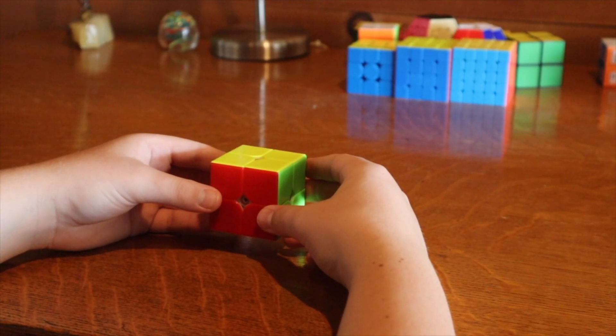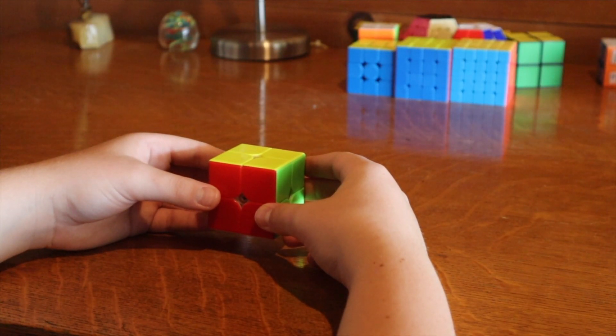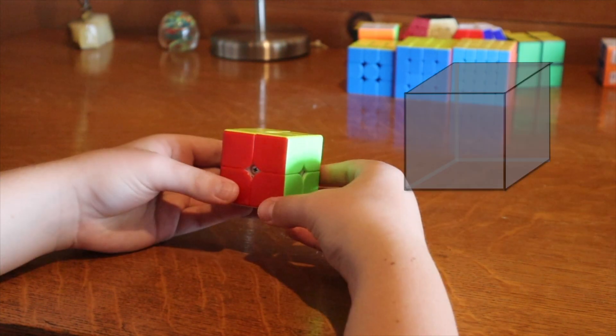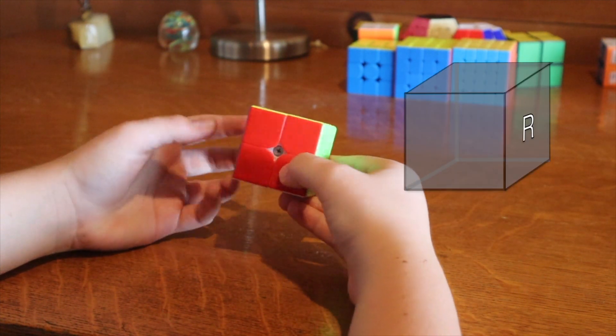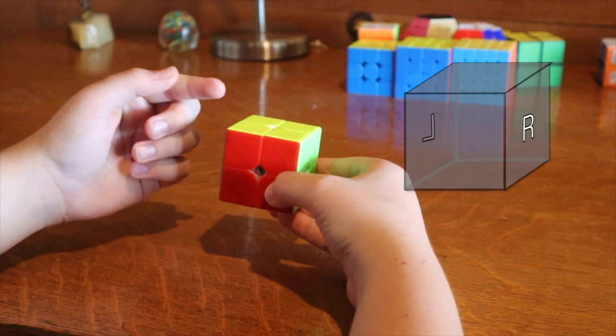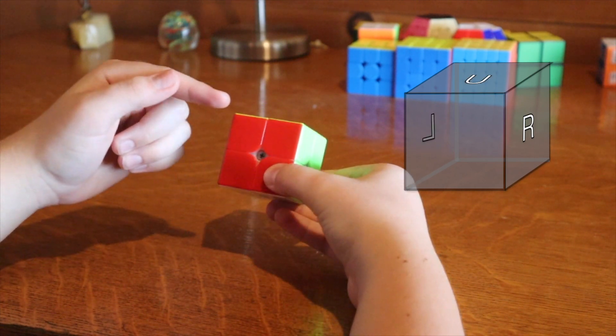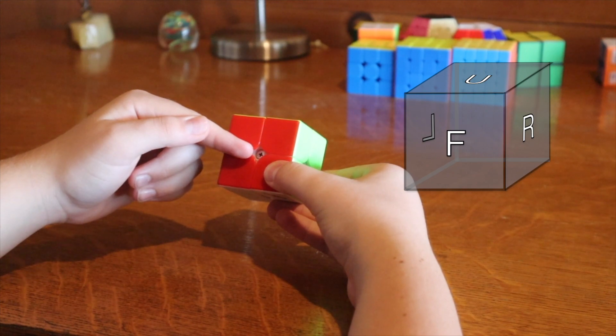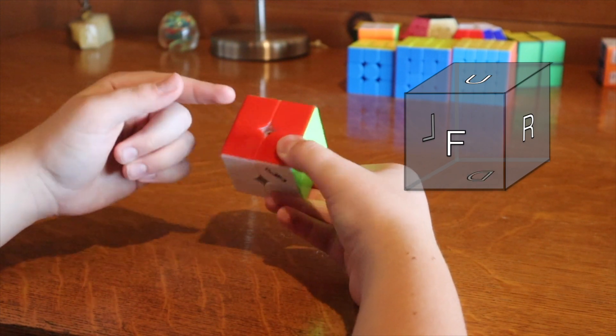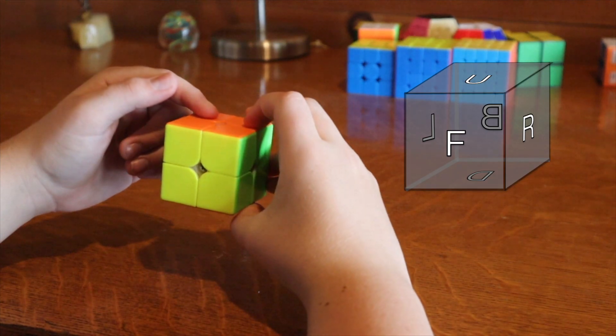There are six faces on a Rubik's Cube, and each one is assigned a letter. The letter stands for the name of that face. R is the right face, L is the left face, U is the upper face, F is the front face, D is the down face, and B is the back face.